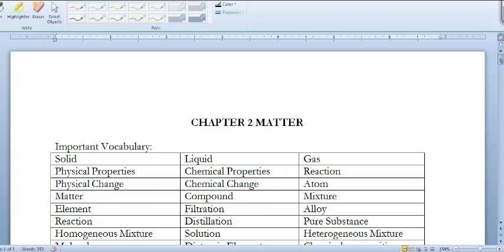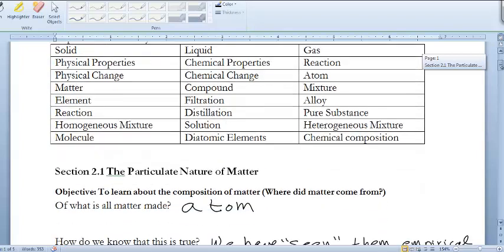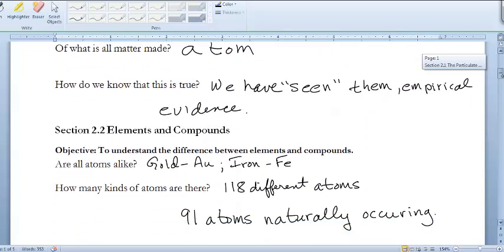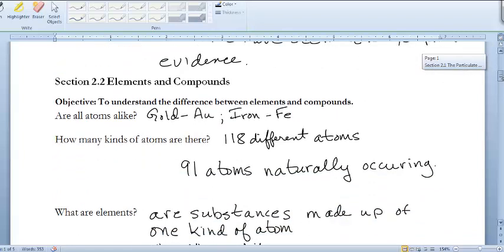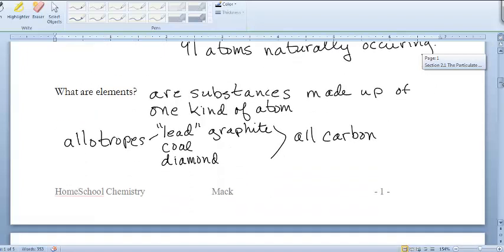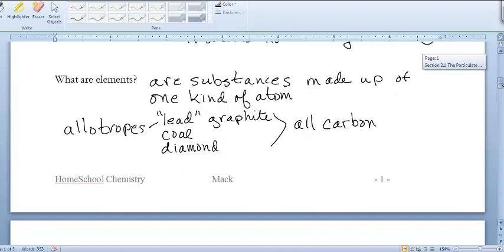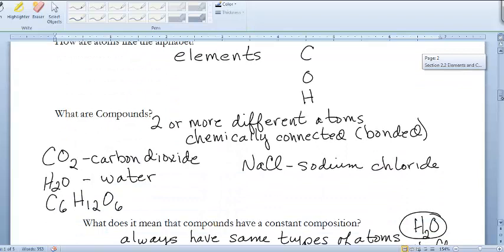In our last segment, we were looking at chapter 2 and the nature of matter. The particular nature of matter, we looked at the atom and discovered that the elements on the periodic table are each unique kinds of atoms, even though sometimes they appear in different forms, such as the allotropes of carbon.